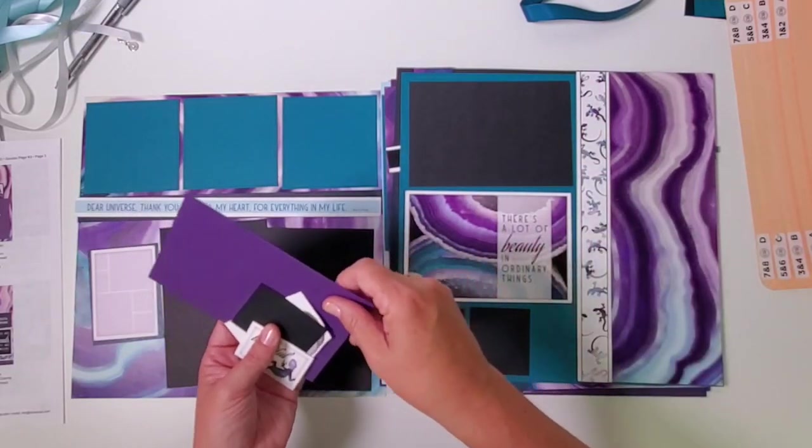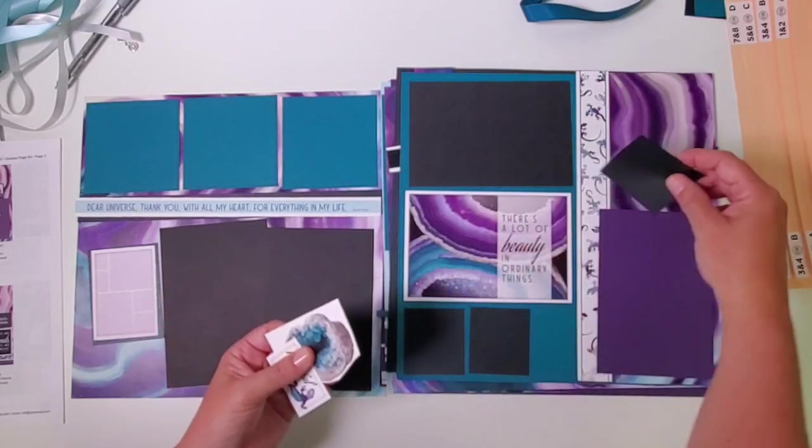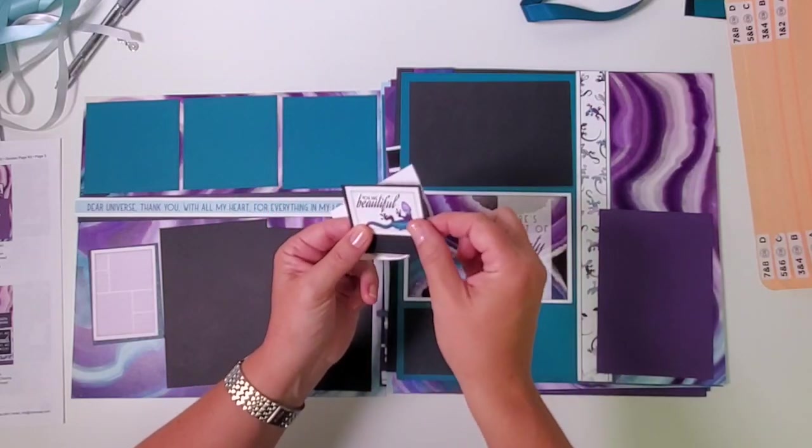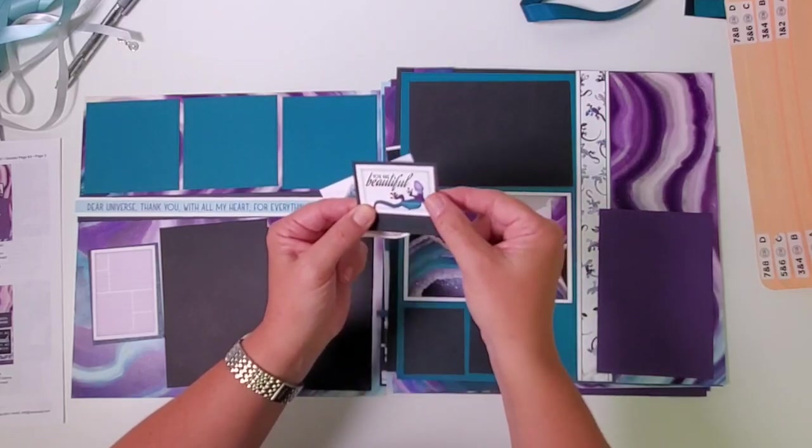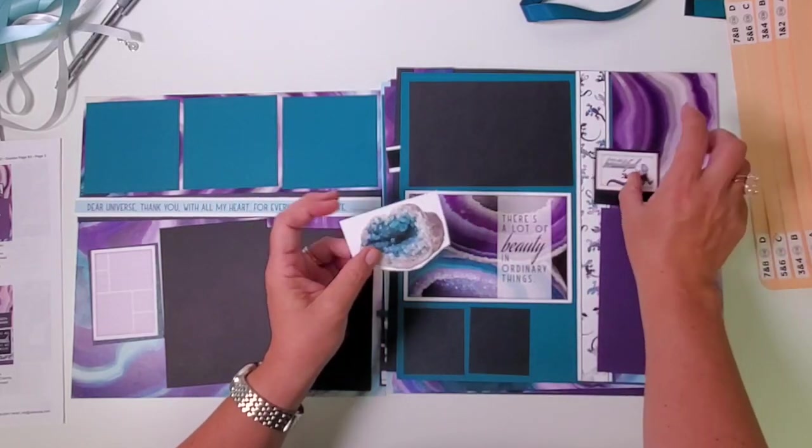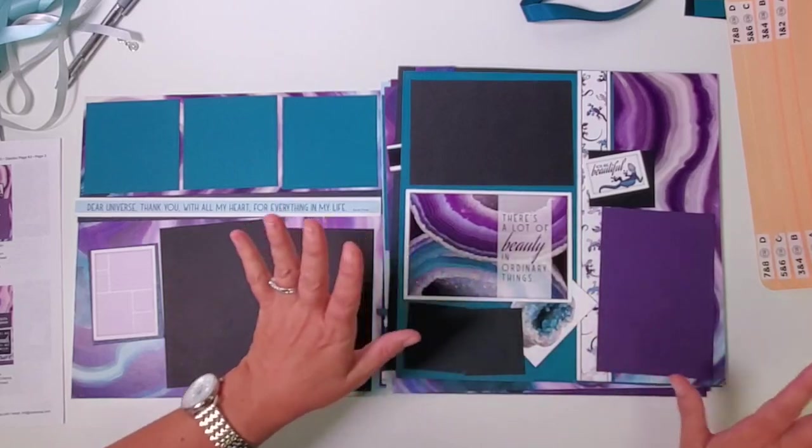I found out the width of this cut-apart matched the width of this rectangle I created earlier, but it was a little too long. I'll show you what I did with that in a moment. You can tuck this behind here once it's trimmed.